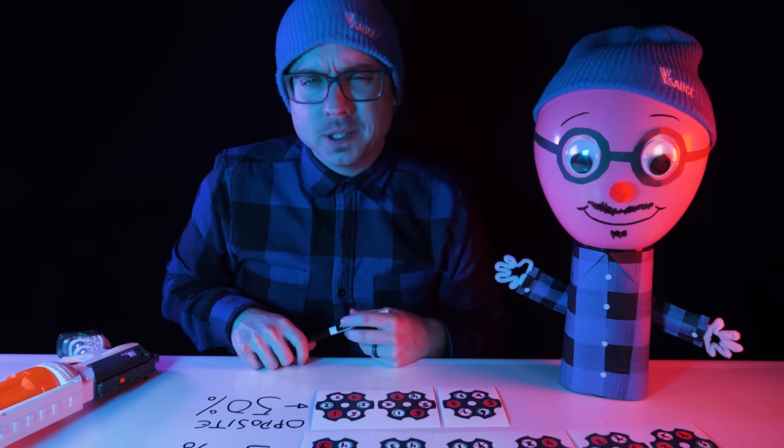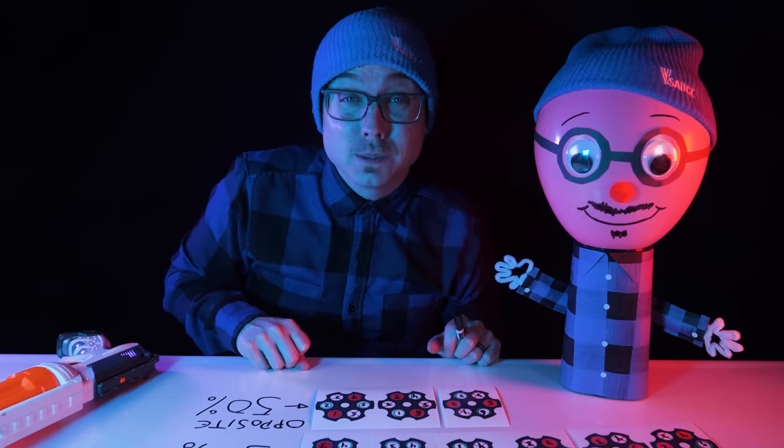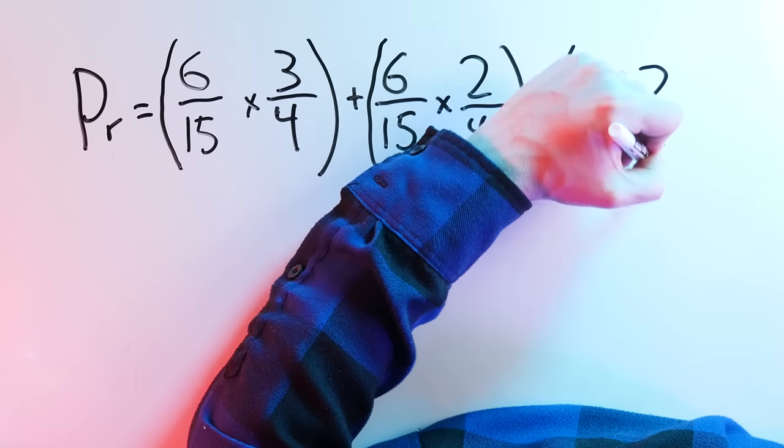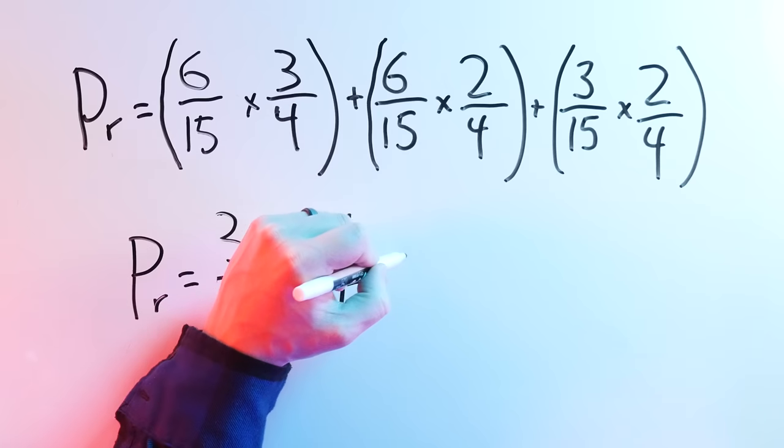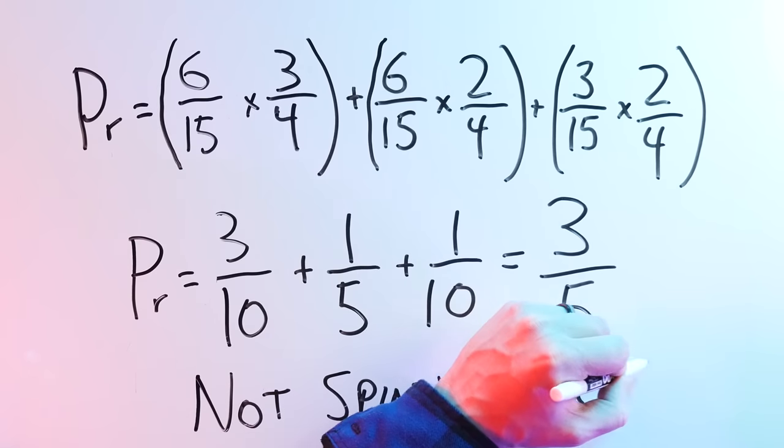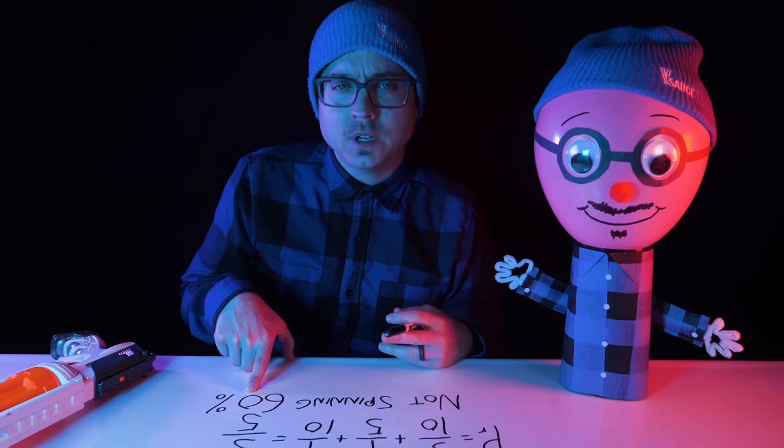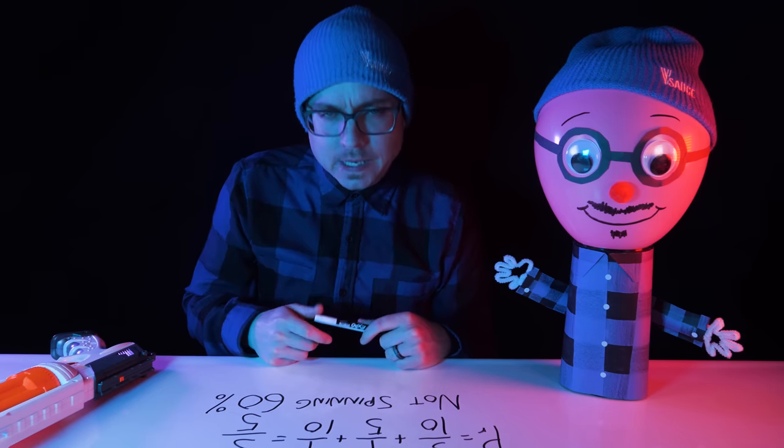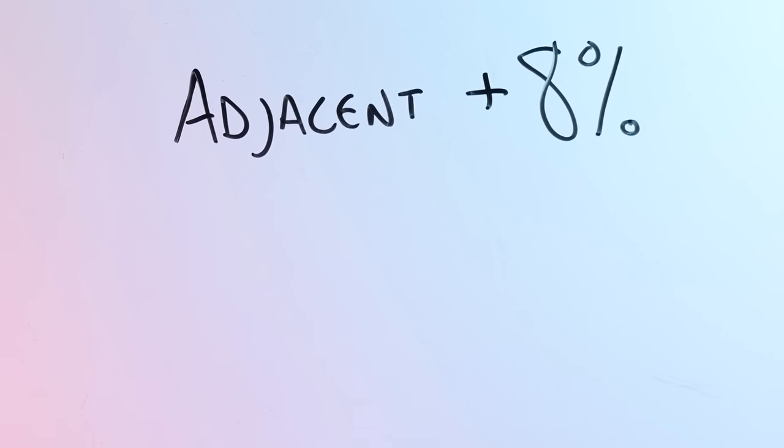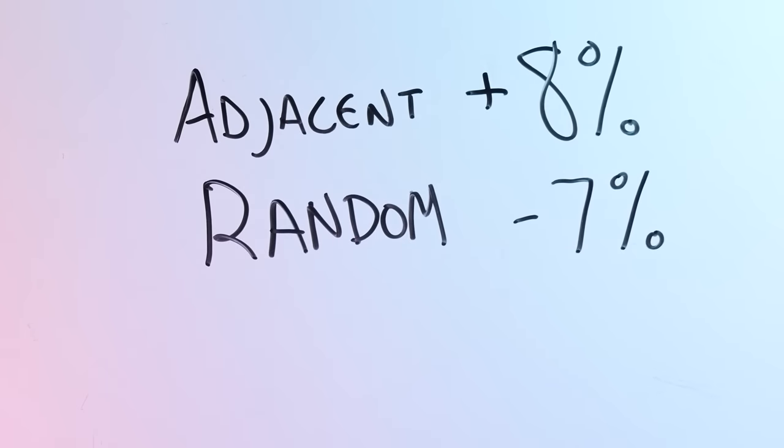Our overall safety probability here is a calculation of those weighted probabilities, and it goes a little something like this. 6 over 15 times 3 over 4 plus 6 over 15 times 2 over 4 plus 3 over 15 times 2 over 4. 3 over 10 plus 1 over 5 plus 1 over 10 equals 3 over 5. By not spinning here, we have a 60% chance of survival compared to 66.67% 2 over 3 when we do spin. When we know the darts are adjacent, we can gain 8% survivability. When we know they're random, we can avoid losing about 7%.